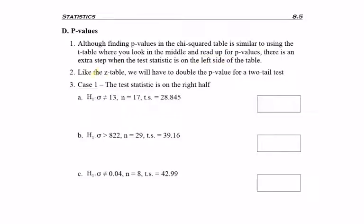Similar to the z-table but not the t-table, we're going to have to double the p-value for a two-tail test. In the t-table, there was a two-tail row at the top, so we always got to just use that.